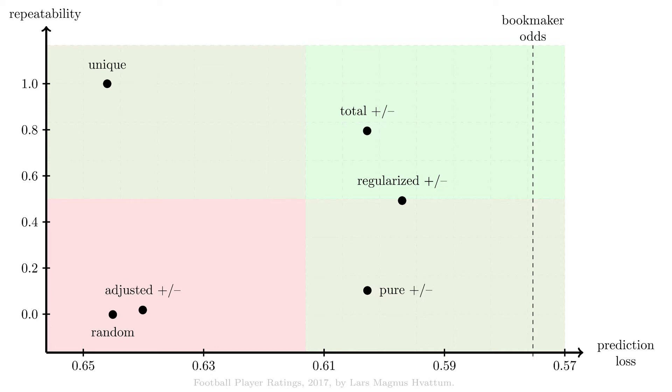At this point, we have two rating systems that are worth keeping. The total plus minus is best with respect to repeatability, disregarding the unique benchmark, and the regularized plus minus rating is best with respect to prediction loss. The other two rating systems, pure plus minus and adjusted plus minus, are dominated. There are other rating systems that are better with respect to both available measures.